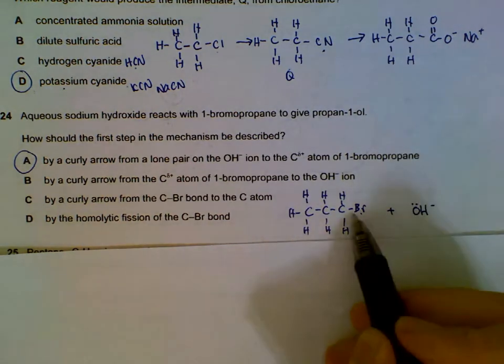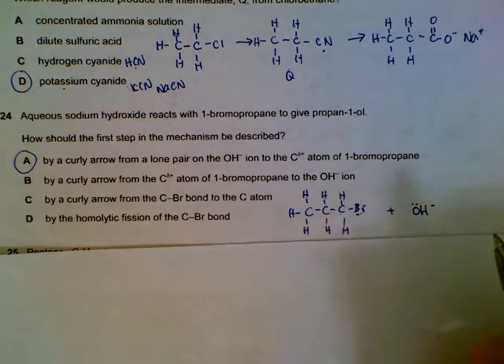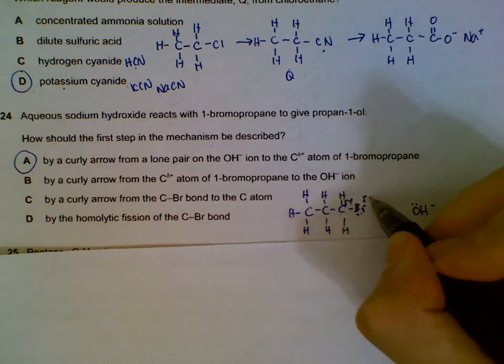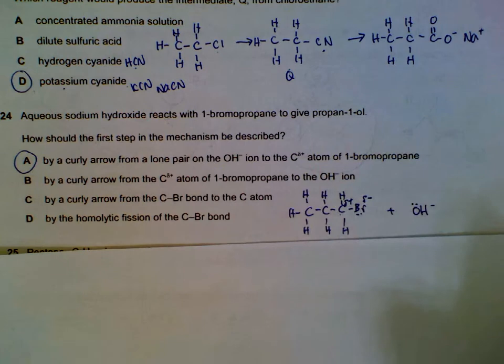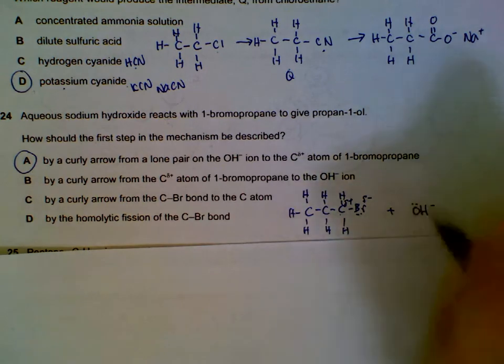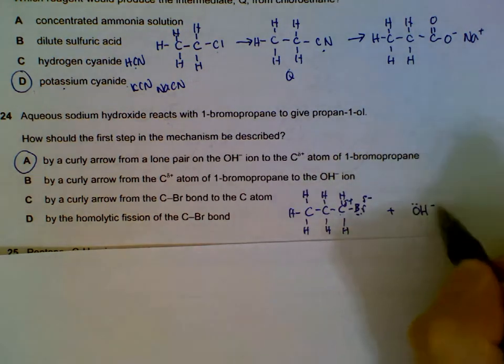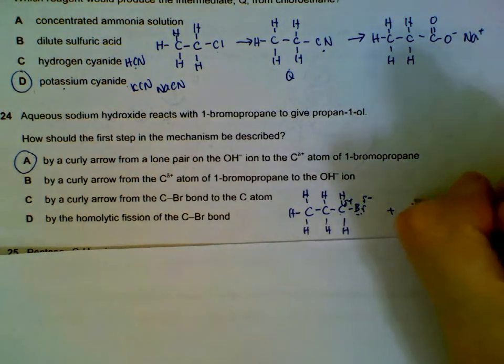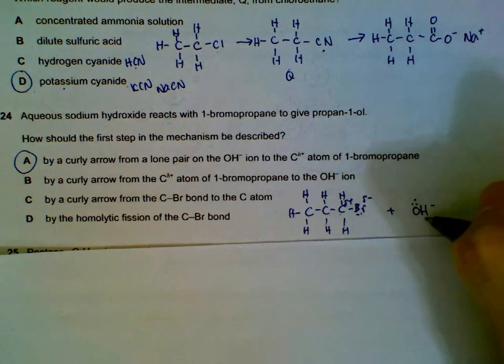What actually happens is because bromine is electronegative, more so than carbon, it will cause the carbon to be partially positive, the bromine will be partially negative. And then this OH minus with its lone pair here will be attracted to a positive region.